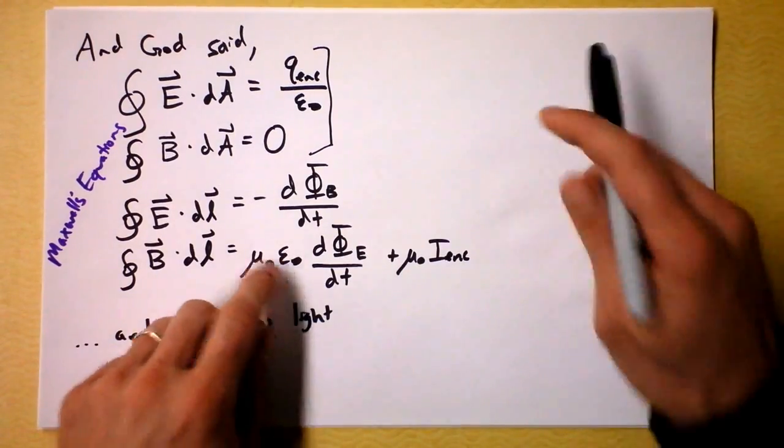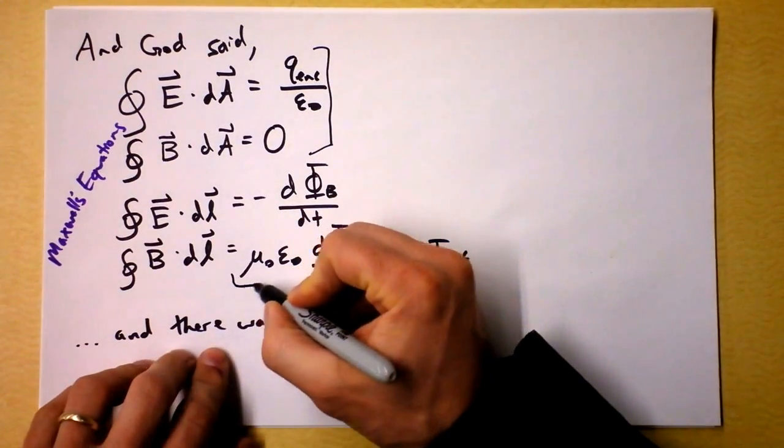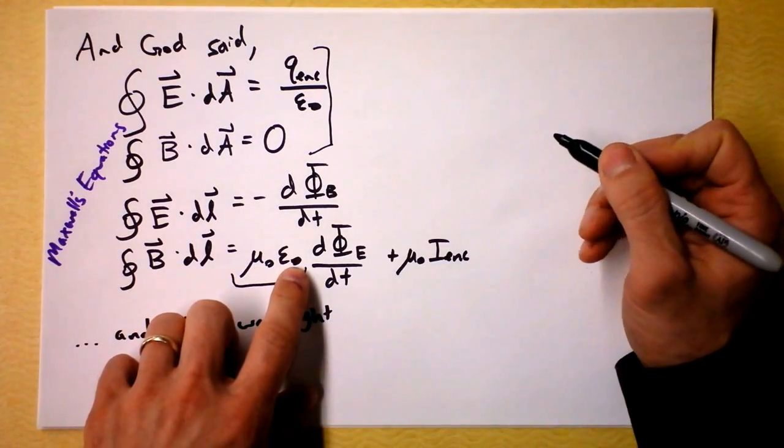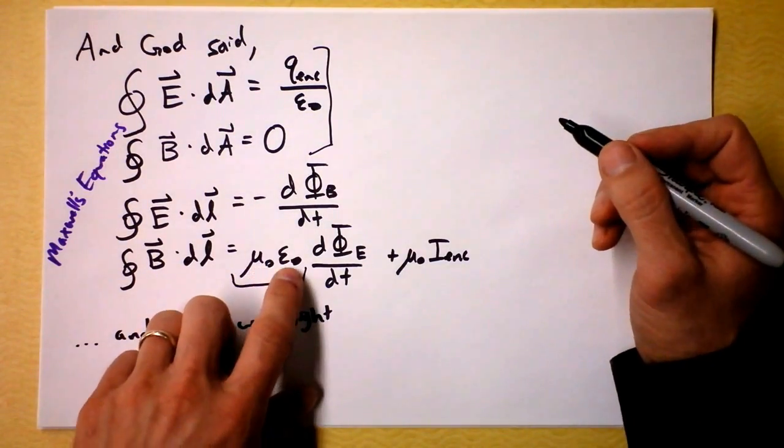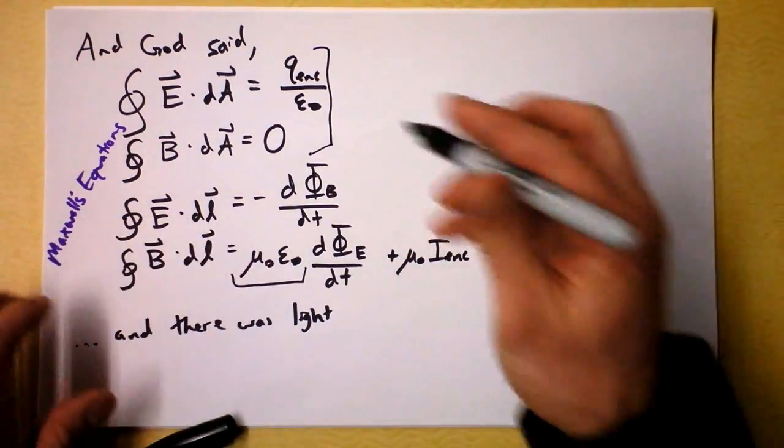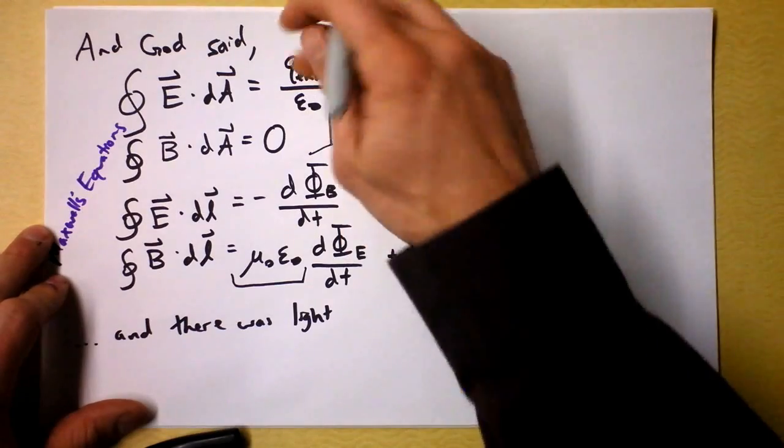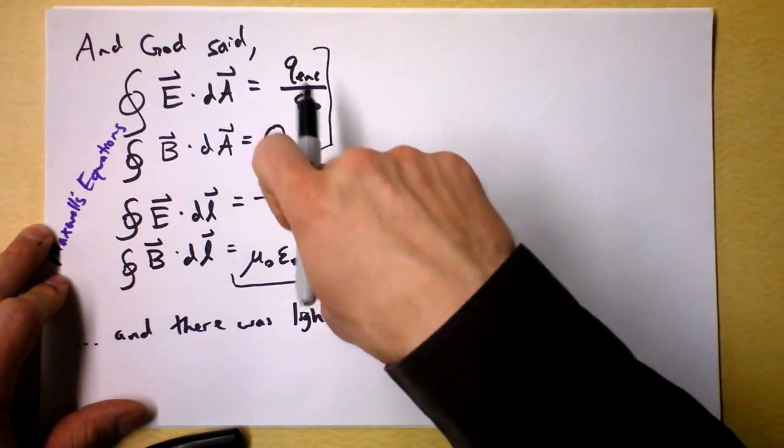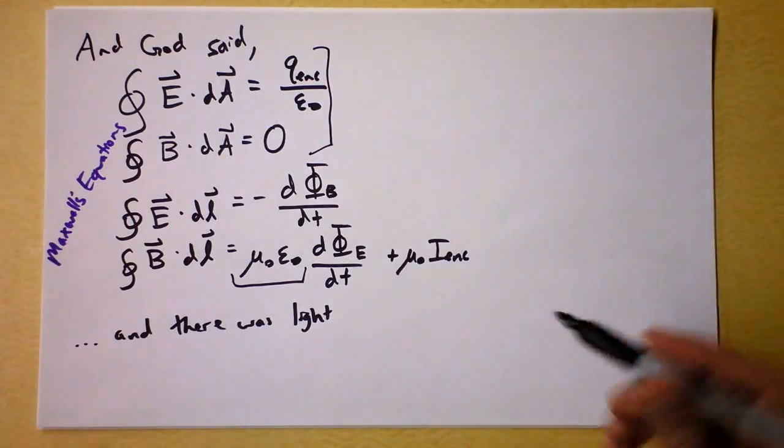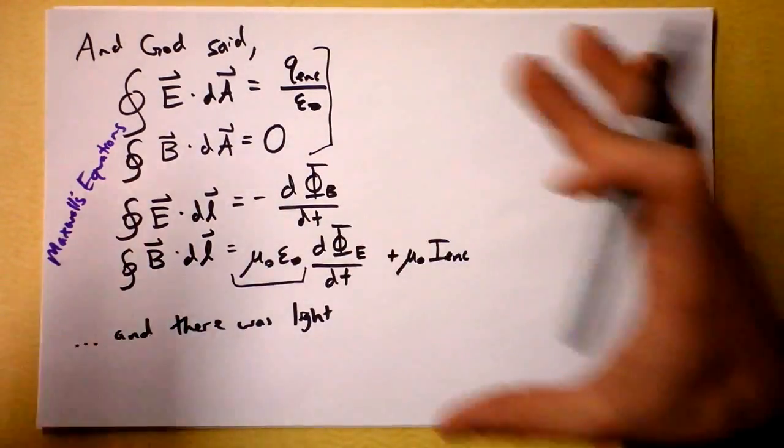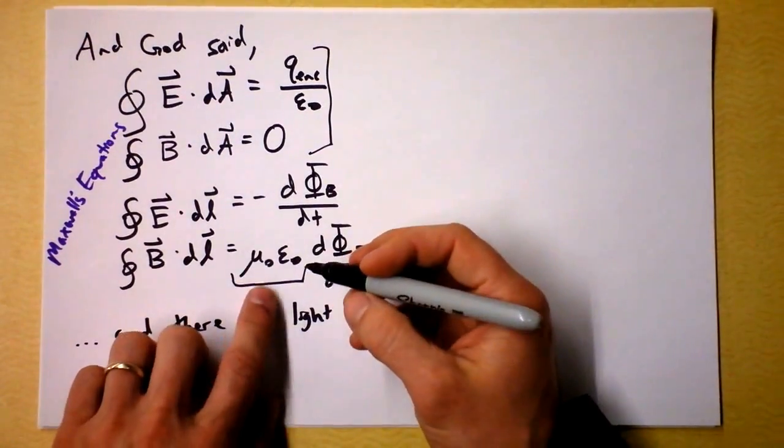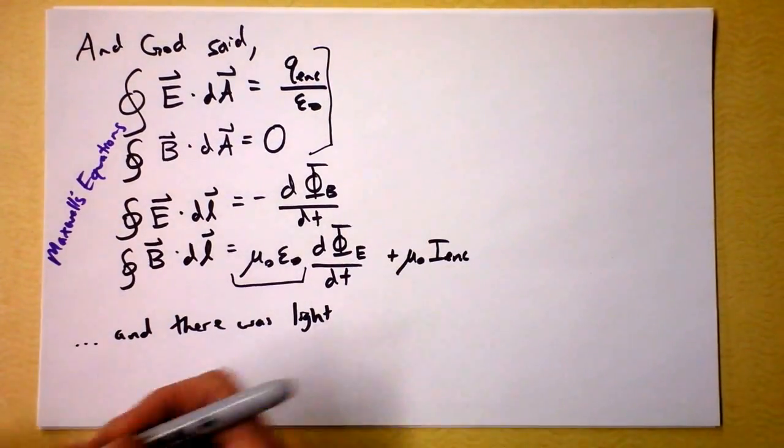This thing right here out front though is the permeability of free space times the permittivity of free space. These are two constants of nature, one having to do with electricity and the other having to do with magnetism. So as soon as Maxwell took all four of these equations - Gauss's law, Ampere's law, and the other thing, and the lack of existence of magnetic monopoles - and put them all together and published them, he had encapsulated all of electromagnetism and united them together.